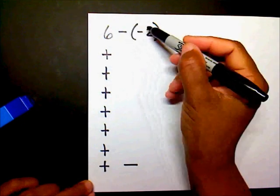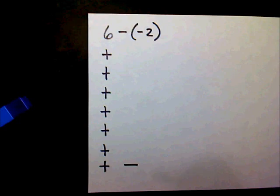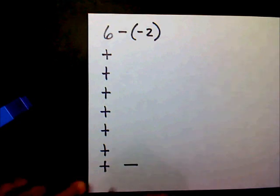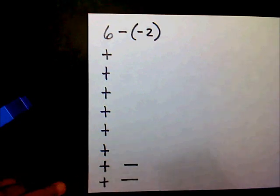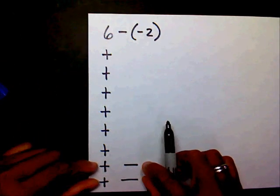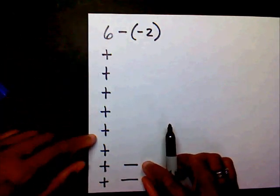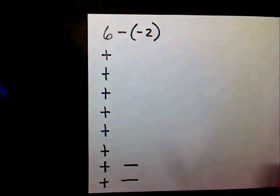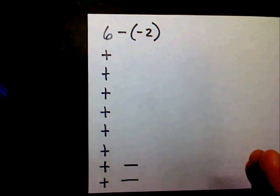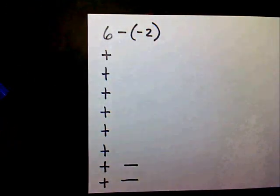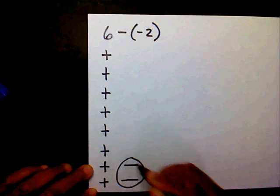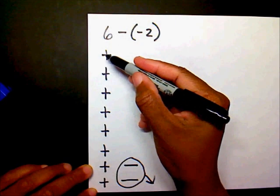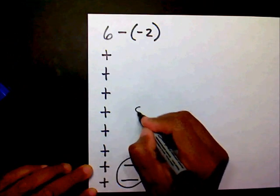Now can I subtract two negatives? No, I can only subtract one negative, so I need to add another zero. In this problem I actually added two zeros, and I still have a total of six positives here — it just looks different. Now that I've worked my problem, I have six minus negative two. Can I take away two negatives? Yes I can, and that leaves me with eight. So my answer is eight.